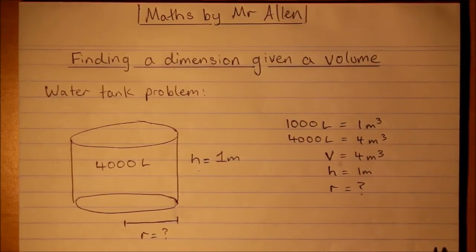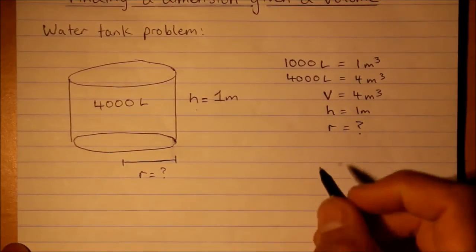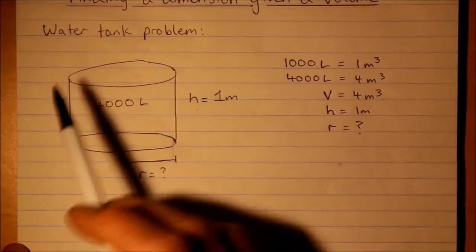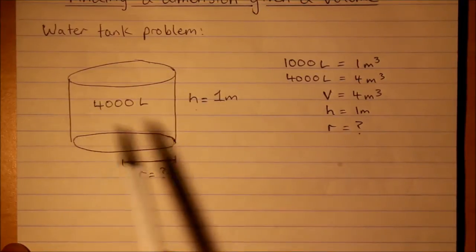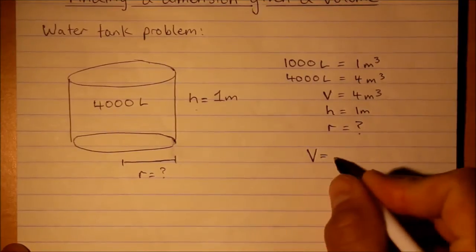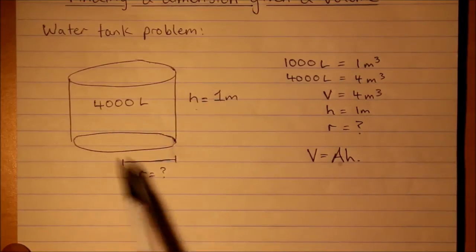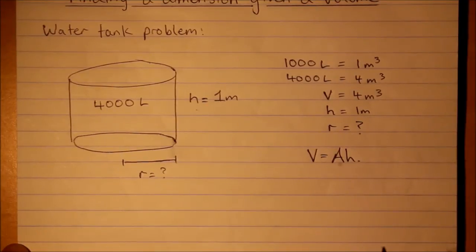So we are going to need the formula for this prism, the volume of a prism. Well it's not a prism but this cylinder. Okay, it's the same formula though because it has a cross section that's the same at the top and the bottom.